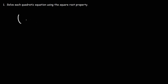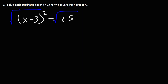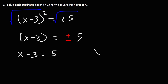Now for the next problem: x minus 3 squared is equal to 25. In this format, we can square root both sides of the equation — the square root and the square will cancel, leaving x minus 3 on the left. The square root of 25 is 5, but we're going to get two answers: plus or minus 5. So we write two equations: x minus 3 equals positive 5, and x minus 3 equals negative 5.